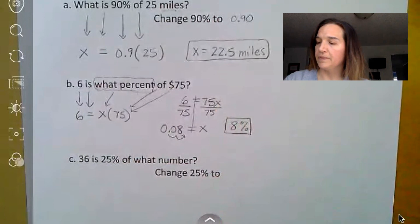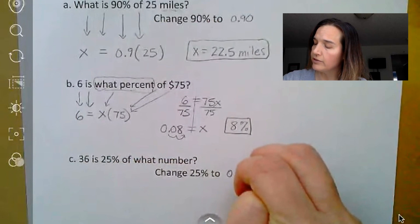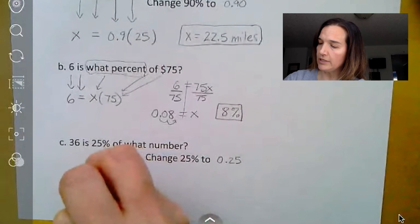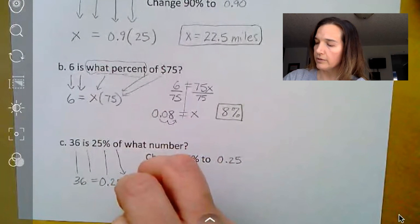And we end up with 8%. And our last one, 36 is 25% of what number? And again, we're going to change the 25% on this one to 0.25, because we can't use the percent, so we made it a decimal. We're going to translate everything we have one more time. So 36 is, so that's my equal sign, 36 is 0.25 of, that's my multiplication sign. What number? I don't know it. That's my x.